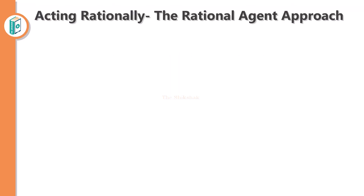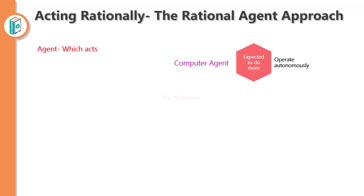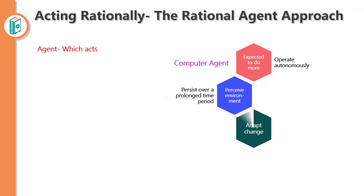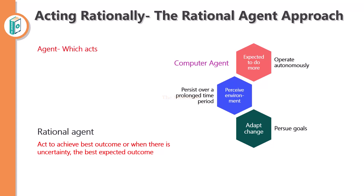The last approach is the rational agent approach. An agent is one who acts. Computer agents are those expected to do more — they will change, create, and pursue goals, and they must adapt to changes from the environment. A rational agent acts so as to achieve the best outcome, or when there is uncertainty, the best expected outcome. The rational agent must make correct inferences to solve any problem — judging and overviewing the problem to solve it for the best outcome.